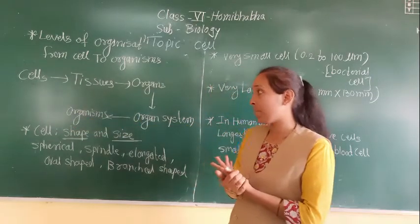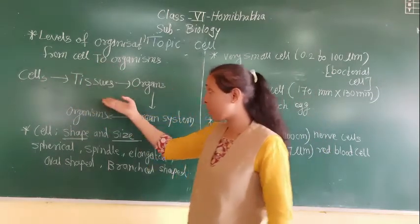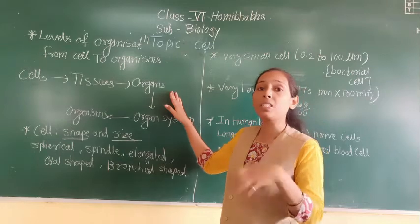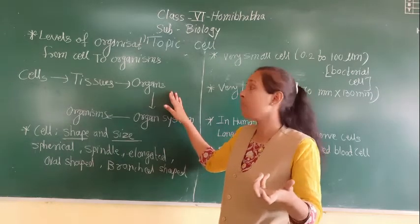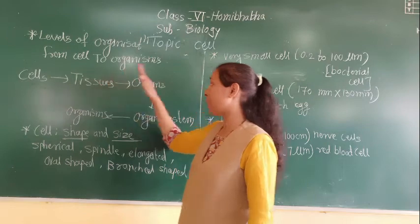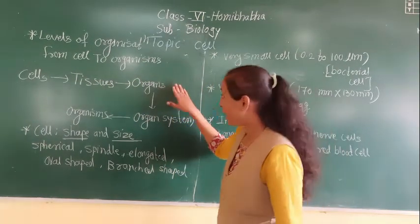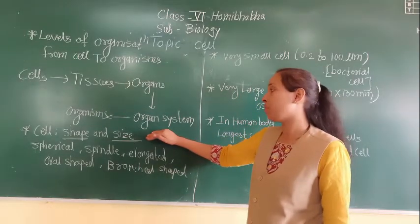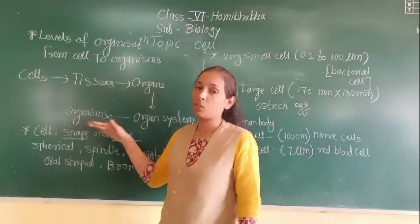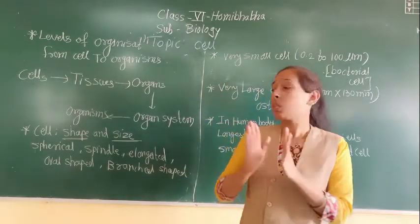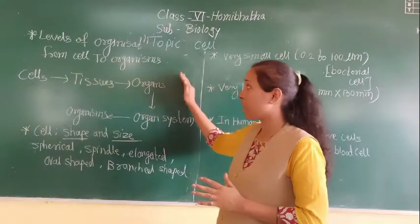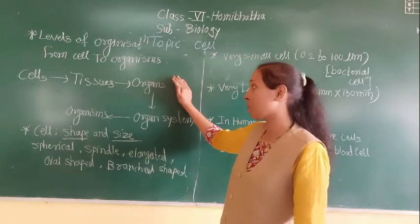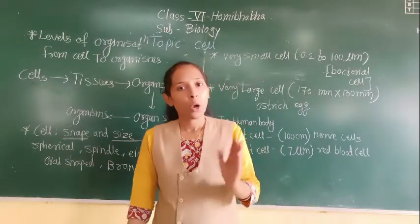For example, taking the digestive system: cells form tissue, from tissue the digestive system organs are made, from the digestive system organs the digestive system is prepared, and from this system the organism is built. There are many systems working in our body in this way. This structural level of organization is present in multicellular organisms but is absent in unicellular organisms.